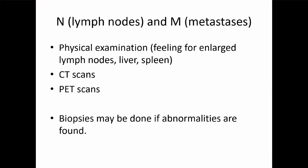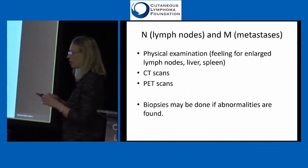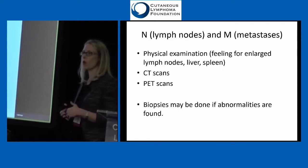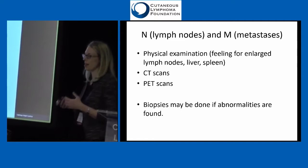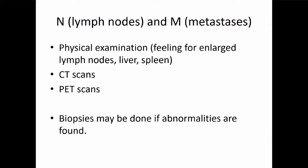If you do have enlarged or abnormal lymph nodes, they may need a biopsy — often more than just a needle biopsy. They may actually need to remove a lymph node to look at under the microscope to determine if it's lymphoma or some other reason that lymph node is enlarged. For metastasis, either you don't have it or you do — M0 or M1. CAT scans and PET scans help us look at the liver, brain, and lungs, which are places cutaneous lymphomas can uncommonly travel to. Rarely, people may need a bone marrow biopsy, where a doctor inserts a needle usually into the hip bone to take out some of the bone marrow to look at under the microscope.